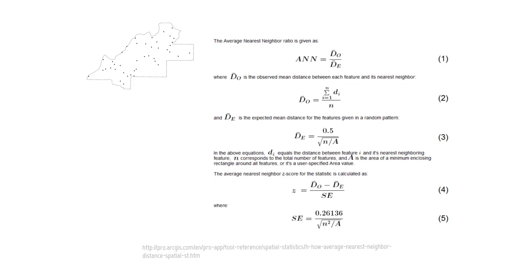Now let's look at how we calculate the expected mean distance. To calculate the expectation, we're going to use this equation: 0.5 divided by the square root of n over A. N, as we saw, is equal to the number of trap sites — so again, 42. The A here stands for area, and that's going to be one of two things: either a minimum enclosing rectangle or a bounding polygon, or in ArcGIS a user can define a specific area.